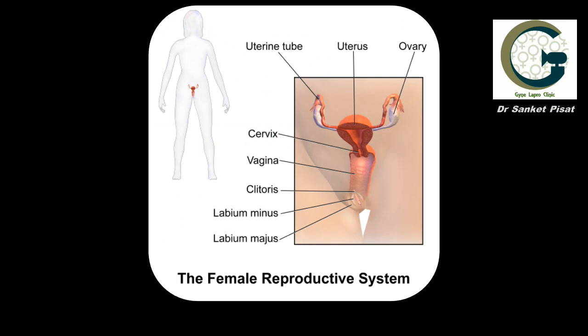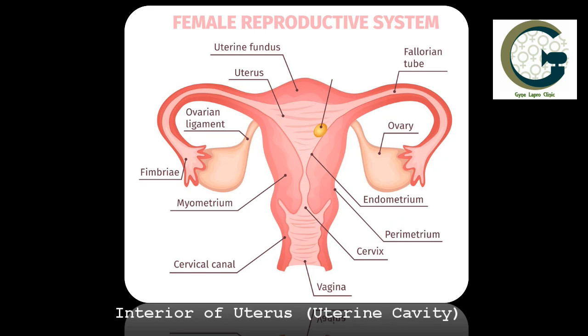The normal female reproductive system consists of the uterus which lies in the center, and a pair of fallopian tubes and ovaries, one on each side of the uterus. This uterus is the organ that normally harbors the child and where the pregnancy grows. The uterus has an inner lining which is also referred to in medical terminology as the endometrium.